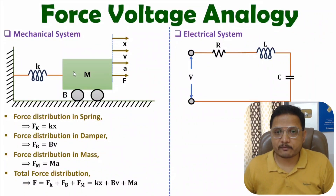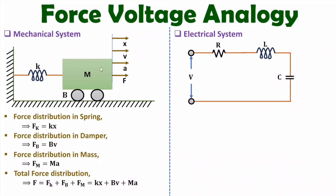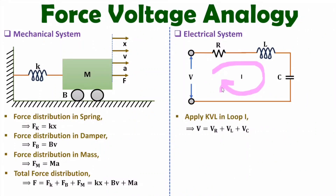Now I will explain the analysis of the electrical system. Consider a closed loop with current i, where three elements R, L, C are connected in series. Applying KVL, total voltage v equals the voltage across resistance plus voltage across inductance plus voltage across capacitance: v = vR + vL + vC. Here vR = i·R, vL = L·di/dt, and voltage across the capacitor is (1/C)∫i dt.